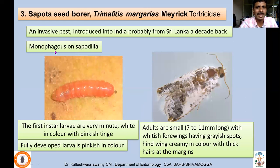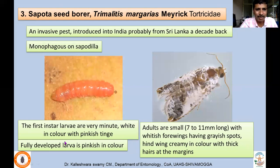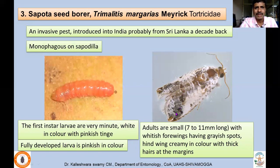The third pest is Sapota seed borer, Trimalitis margaris, which belongs to family Tortricidae of Lepidoptera. This is one of the invasive pests which has entered India and is causing serious losses, probably coming from Sri Lanka. It is monophagous to sapota only and won't attack other fruits or crops. The first-instar larvae are very minute, measuring about half a centimeter, white in color initially, but the grown-up caterpillar turns pink. Adults are small with whitish forewings having grayish spots; hindwings are creamy with thick hairs at the margin. It is also called bell moth.